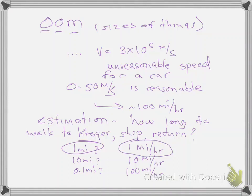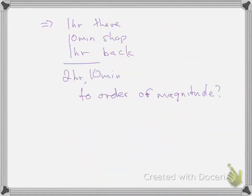So let's say we walk at one mile an hour. So how long does it take me to get to Kroger and back? If it's one mile to Kroger and I walk at one mile an hour, it takes me an hour to get there. It takes me an hour to get back, two hours. How long does it take me to shop? 10 minutes. So order of magnitude, it's two hours and 10 minutes. Ah, careful. It's not two hours and 10 minutes.